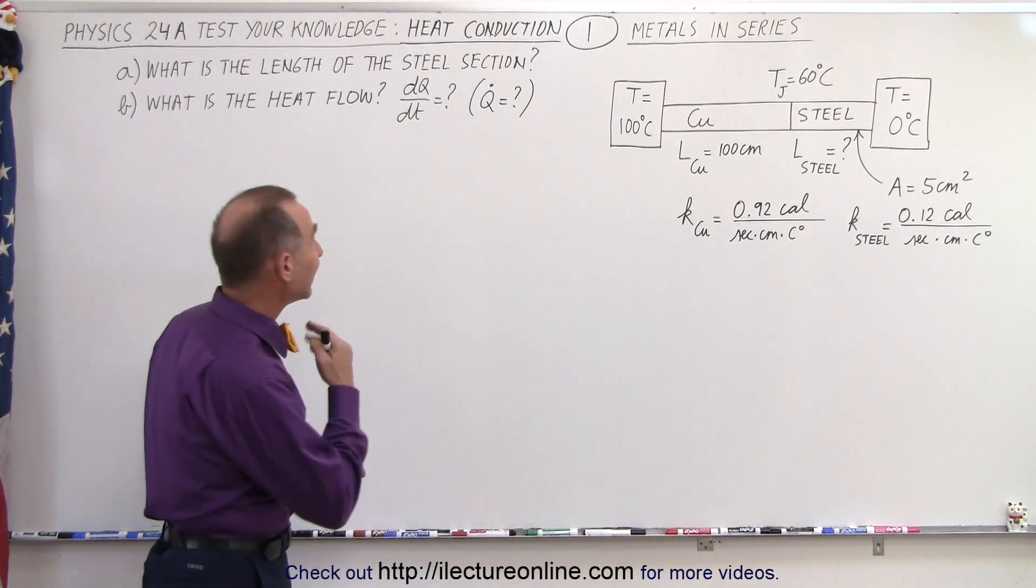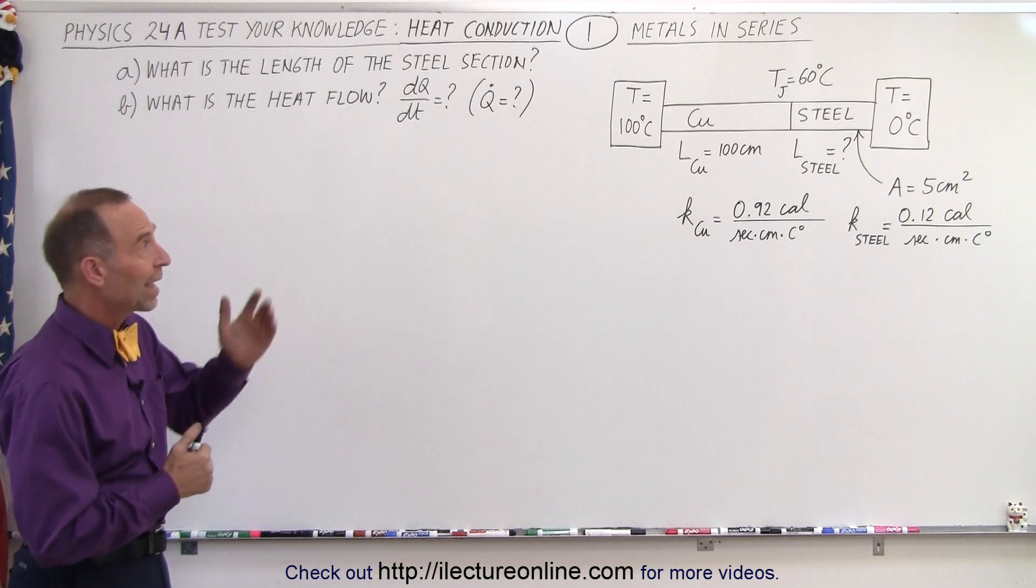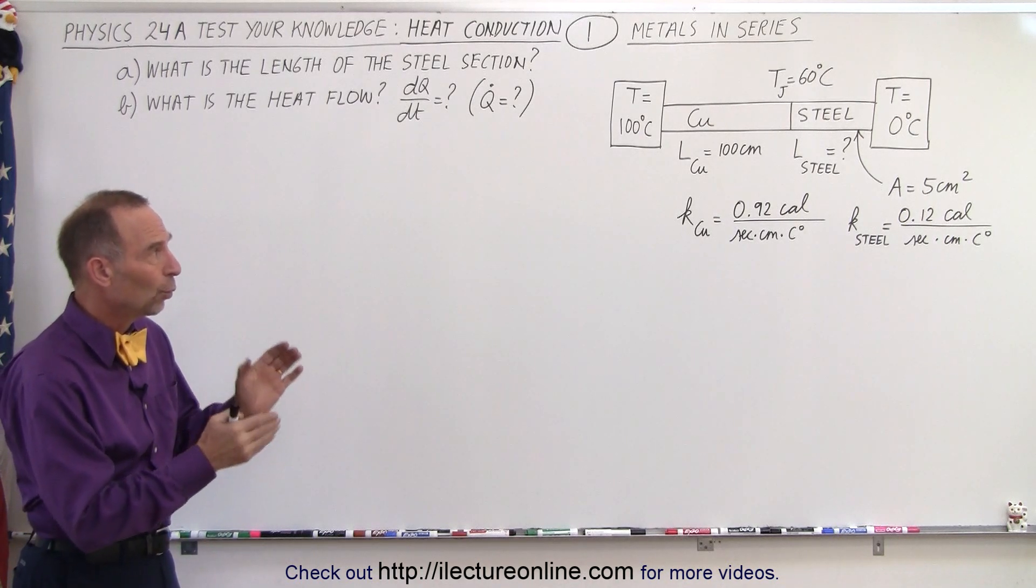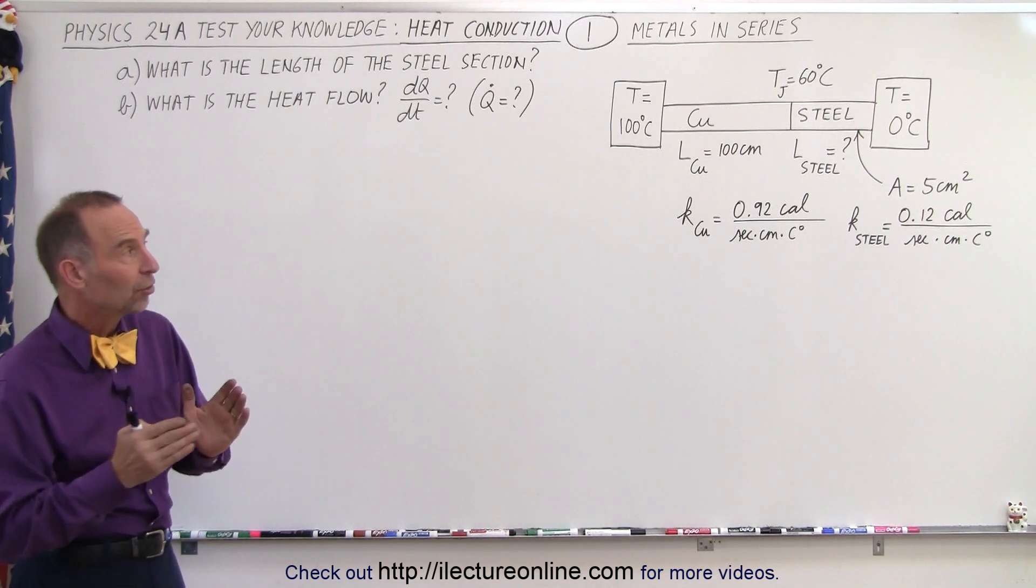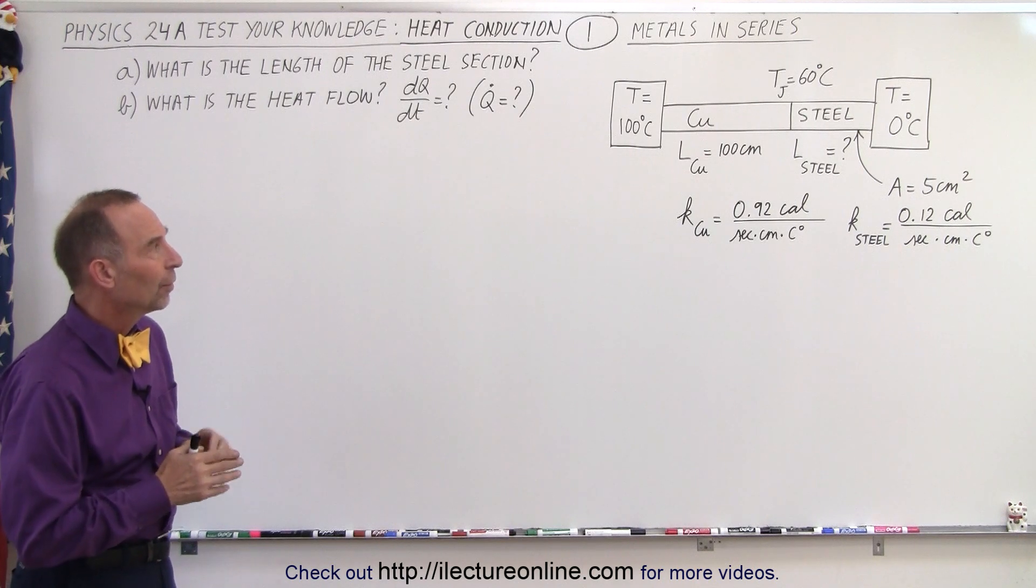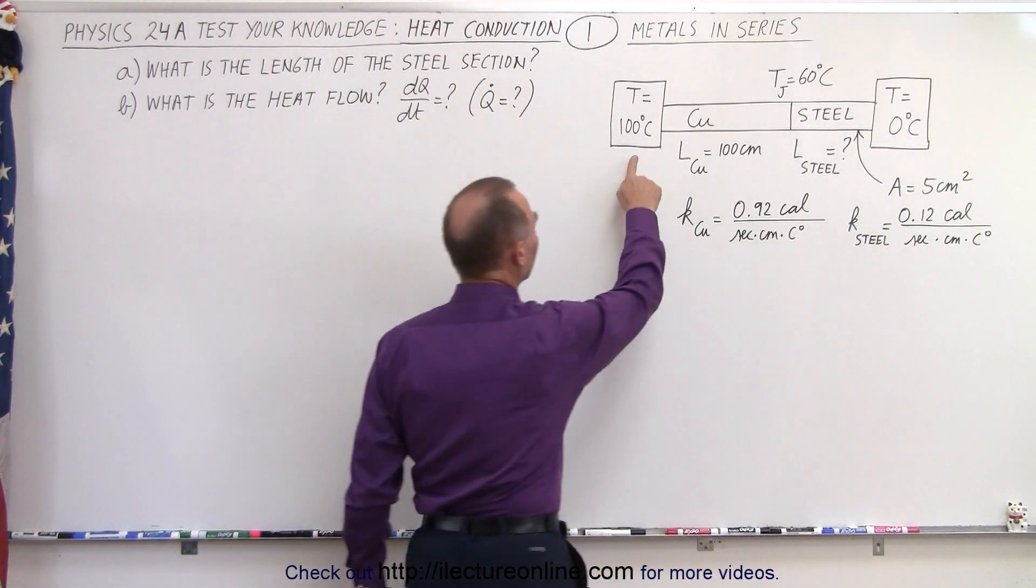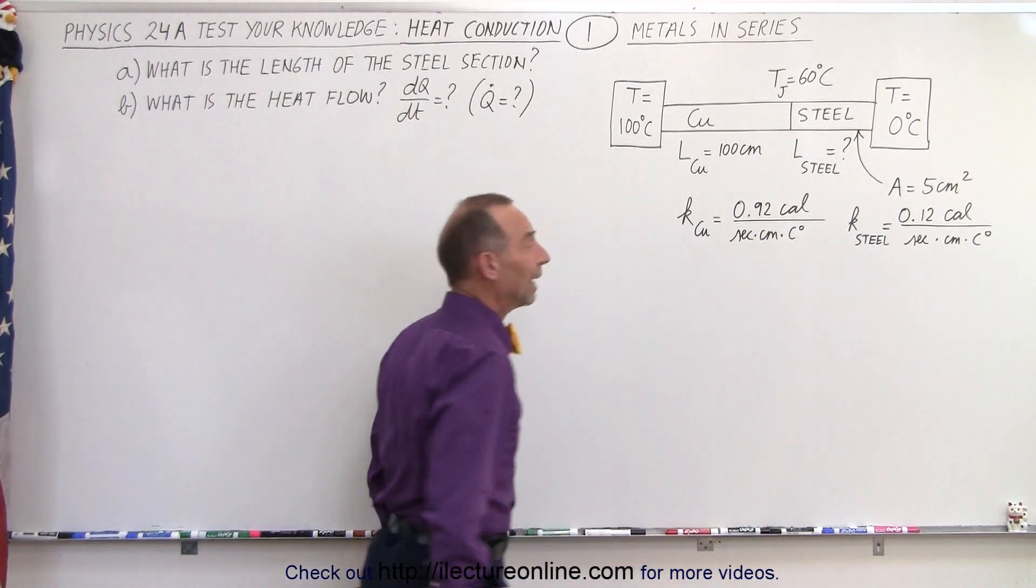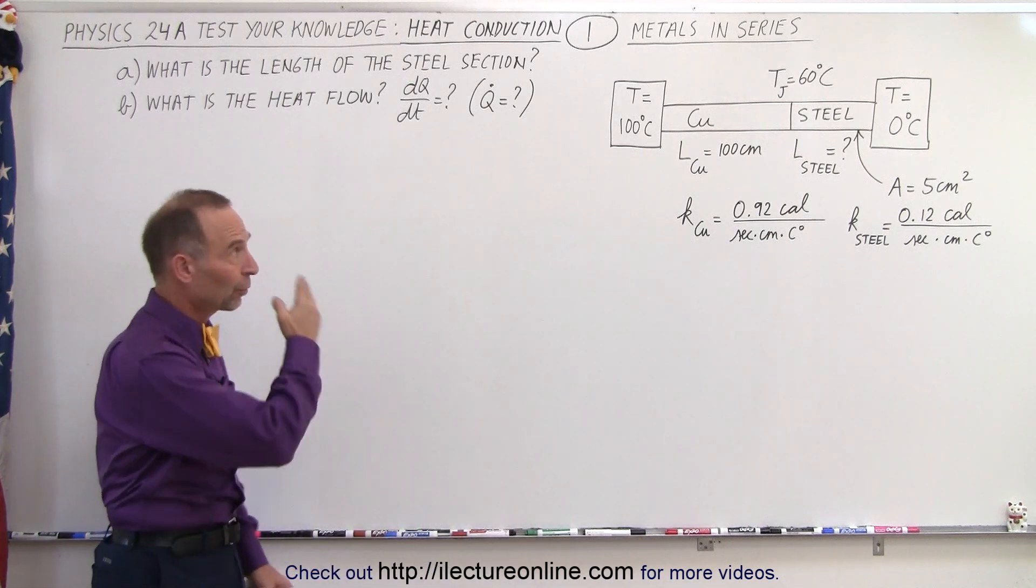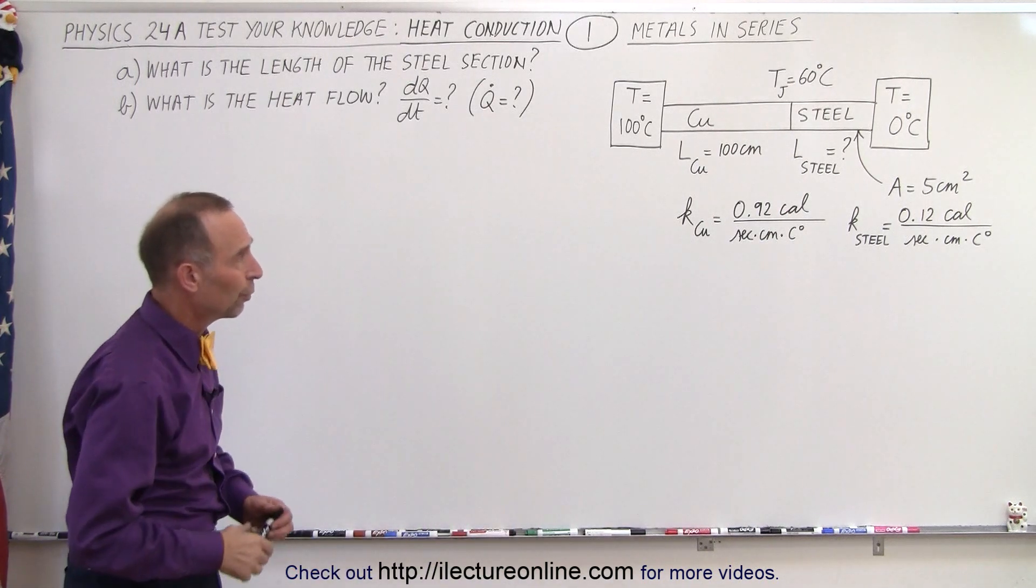Starting with the playlist on heat conduction, here we have two pieces of metal, one made out of copper, one made out of steel, end to end between two heat sinks, one at 100 degrees centigrade and one at zero degrees centigrade.